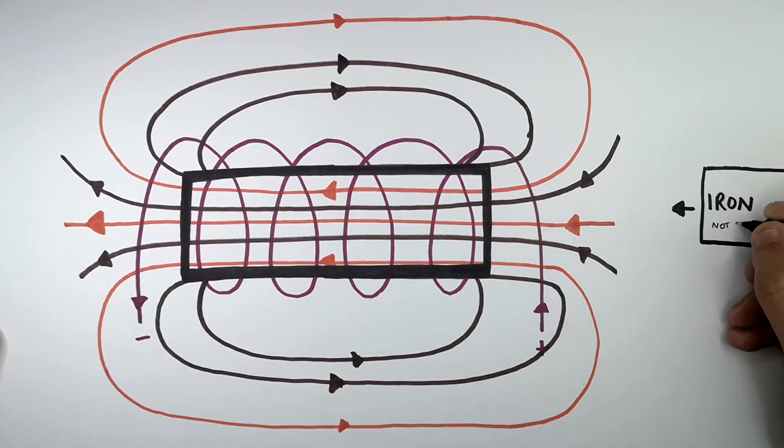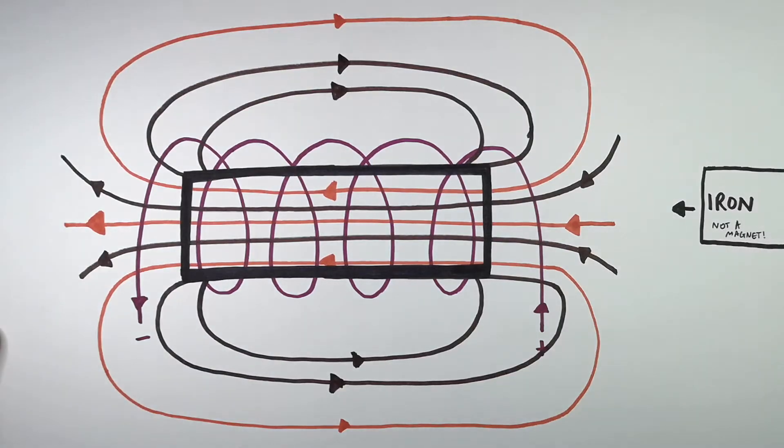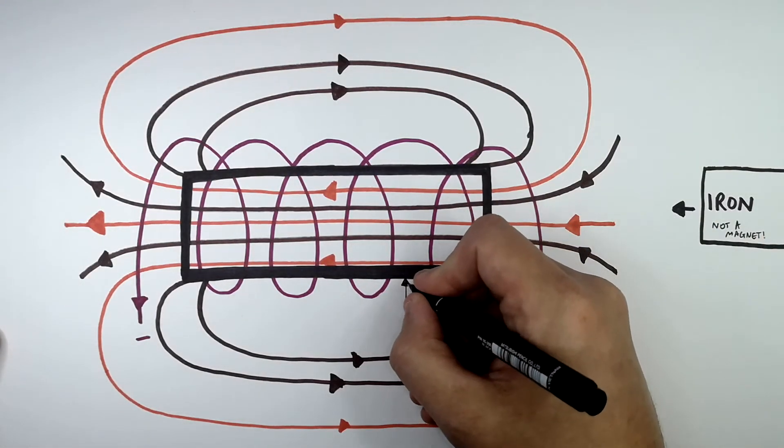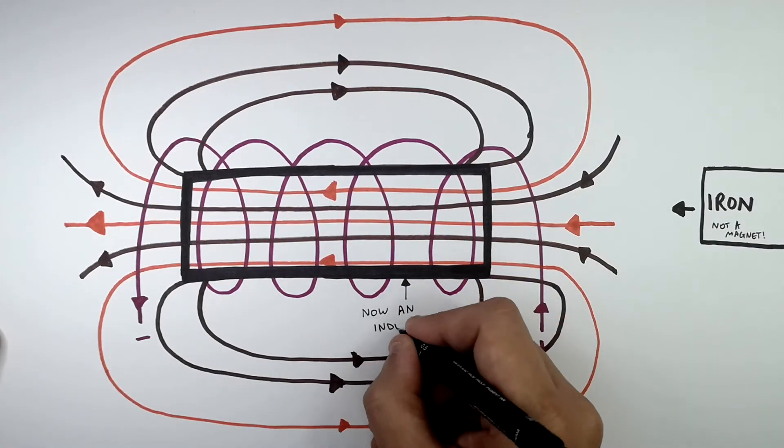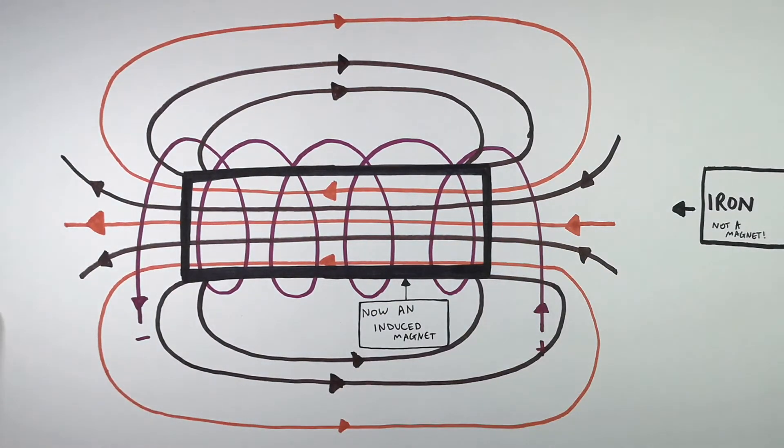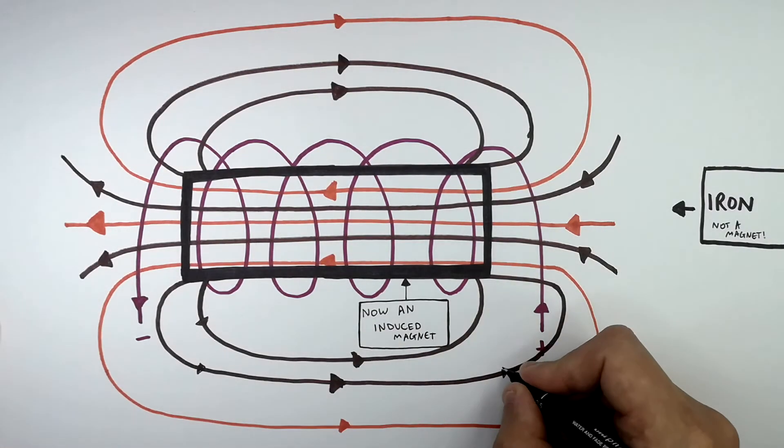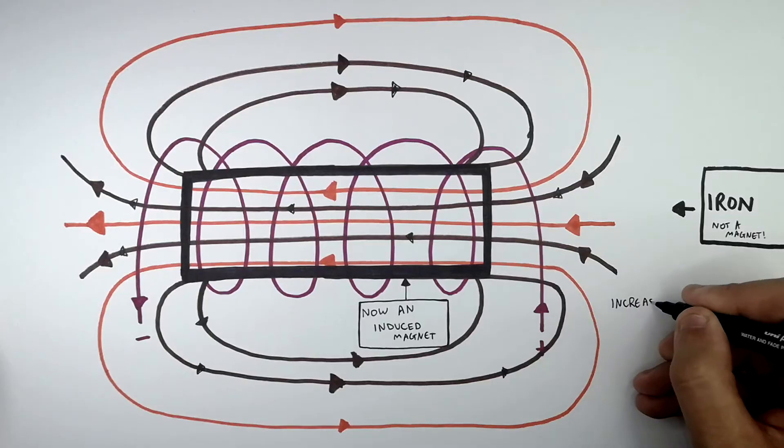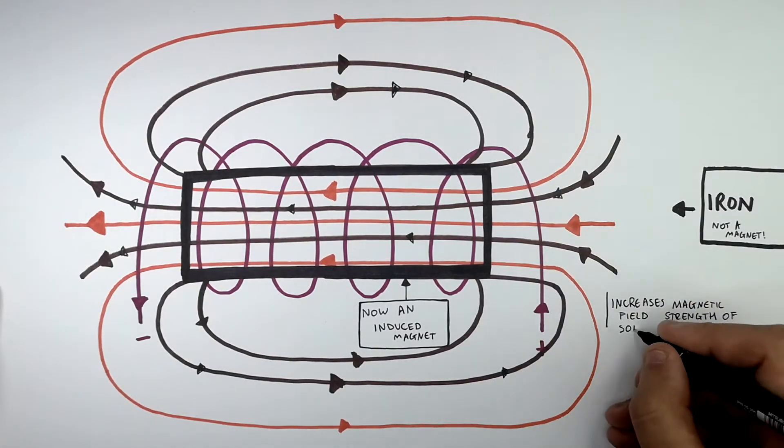So the iron is not a magnet, but when the iron is placed inside the solenoid which is carrying a current, the iron is now an induced magnet. It is now an induced magnet which increases the magnetic field strength of the solenoid.